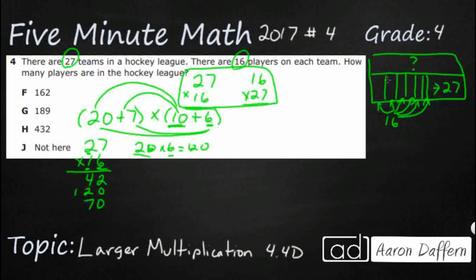And then 10 times 20. Let's see. Multiply your non-zeros. 2 times 1 is 2. Add the 2 zeros. And you've got your 200. So now I've got 4 partial products here.